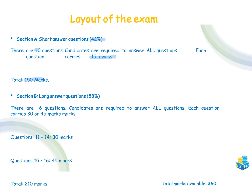Section B, the long answer questions — there are six questions here to be answered. These are worth 58% of the final paper, and once again, you're required to answer all questions. Each question will either carry 30 marks or 45 marks. Usually questions 11, 12, 13, and 14 — the first four long questions — will carry 30 marks, and questions 15 and 16 will carry 45 marks. In total, that's 210 marks for the long answer questions, giving us a grand total of 360 marks for the entire paper.